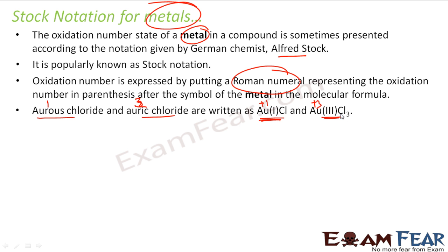If you want, you can find out the oxidation state of Au in this. Similarly, if you see stannous and stannic chloride, stannous chloride is two here, so they have mentioned two in Roman here, and stannic chloride is four, they have mentioned four in Roman here. So just by looking at the formula you can tell the oxidation number and this notation is called Stock.